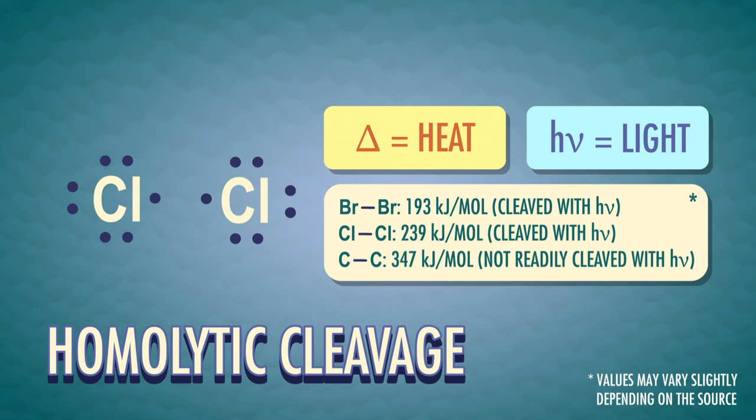We're finally using those fish hook arrows we talked about in episode 13. Radical reactions take place in three stages: initiation, propagation, and termination.